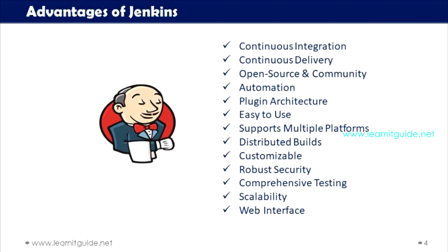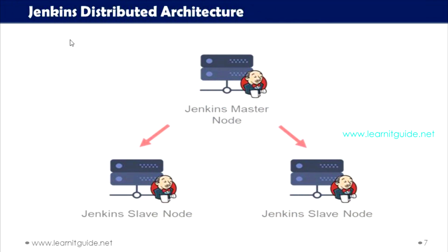Jenkins has a low learning curve, making it easily accessible to both developers and non-technical team members. It also supports multiple platforms — Jenkins can run on various operating systems including Windows, Linux, macOS, and more, since it is written in Java. Another advantage of Jenkins is distributed builds. Jenkins can be set up with a master-slave architecture, allowing you to distribute build and testing workloads across multiple machines. This improves performance, reduces build times, and enhances scalability with high-availability slave nodes.